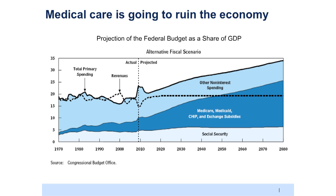Other non-interest spending we don't know how to forecast, so we use the time-honored technique of assuming it will stay the same as a share of GDP. And of course the whale that ate the picture here is healthcare spending — Medicare, Medicaid, CHIP, and the exchange subsidies. Or to put it another way, the US government does not have a deficit problem; it has a healthcare problem.